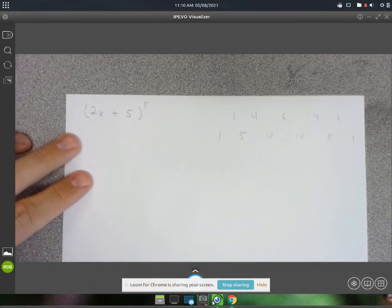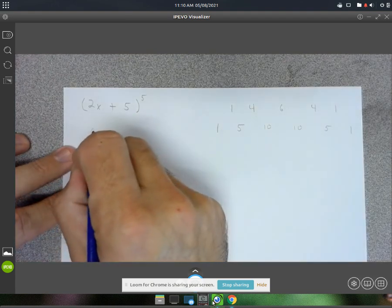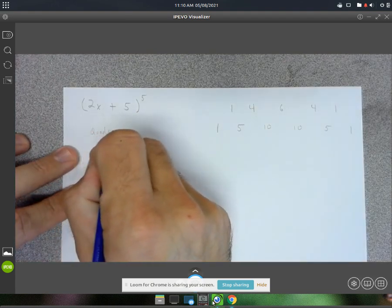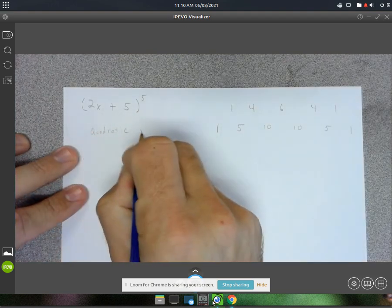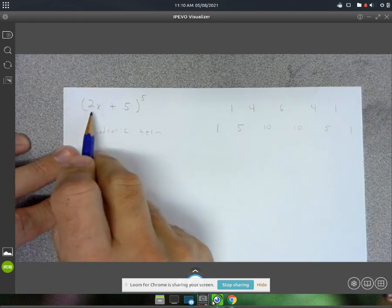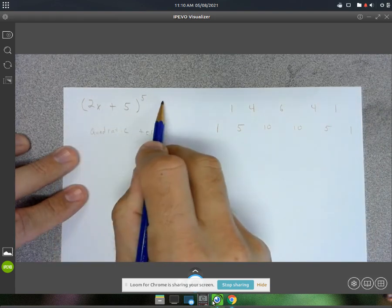Alright, so the question here is, find the quadratic term, just the quadratic term for 2x plus 5 raised to the 5th power.